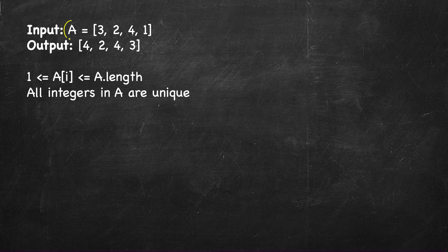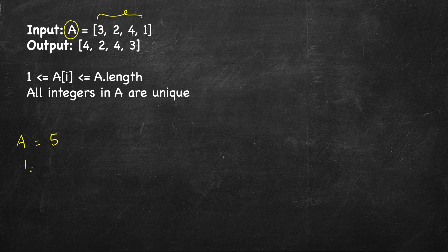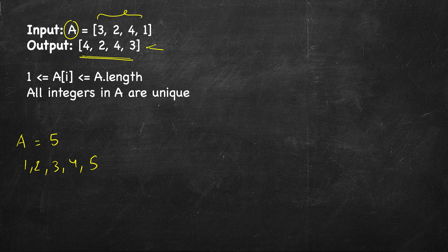Here we will be given one input array or list and the numbers will be from 1 to its size. So if its size is 4, numbers will be from 1 to 4 and all numbers are unique. If you have an array of size 5, then it will be some permutation of 1, 2, 3, 4, 5. We will see how to arrive at the sorted output.